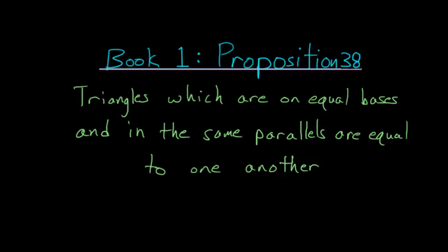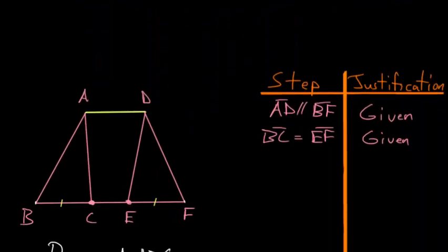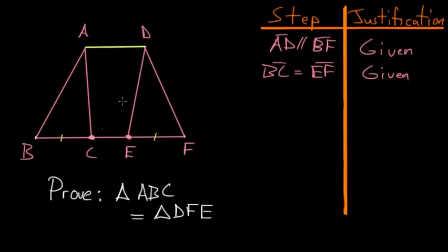For Book 1, Proposition number 38 of Euclid's Elements: triangles which are on equal bases and in the same parallels are equal to one another. So if we start with two triangles, the triangle ABC and the triangle DEF...